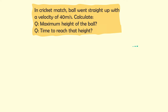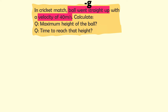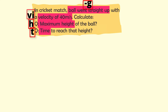Let me highlight the given data. The ball went straight up, meaning it has negative gravitational acceleration g. With velocity 40 meters per second, the initial velocity vi equals 40 m/s. We need to find maximum height h and time t to reach that height. So we have four variables in this numerical: gravitational acceleration g, initial velocity vi, height h, and time t.